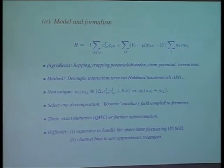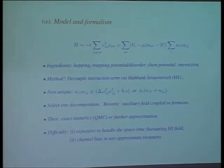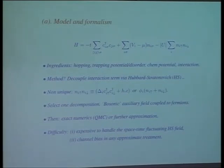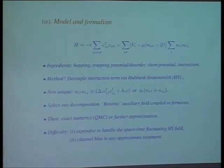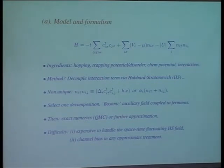A model. You take the nearest neighbor tight-binding problem on a 2D square lattice. V could be either a random potential or the trapping harmonic confining potential. And this is the attractive interaction. The ingredients are hopping, the trapping or the disorder potential, chemical potential for density control, and the strength of the interaction. The density in the clean problem is not a very important variable, except when you go to half-filling. We will examine the clean flat problem for a generic density of 0.9. But when you go to the trap, densities become inhomogeneous.